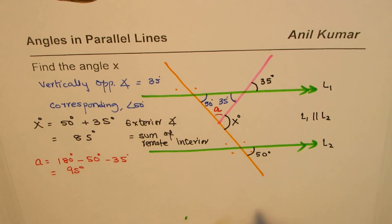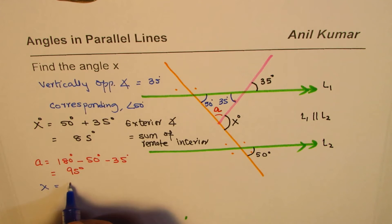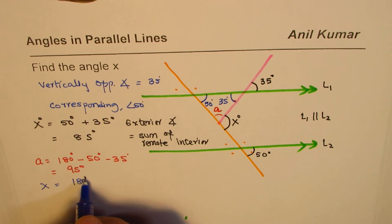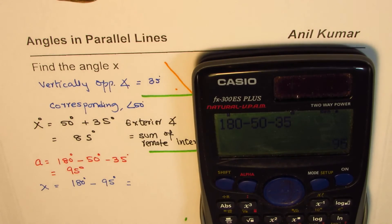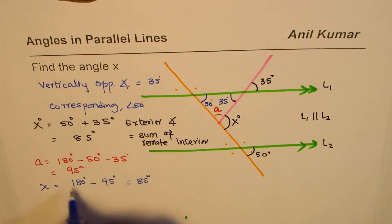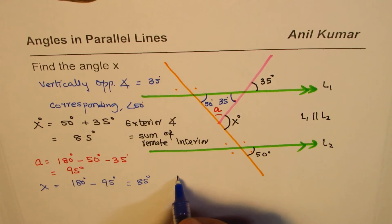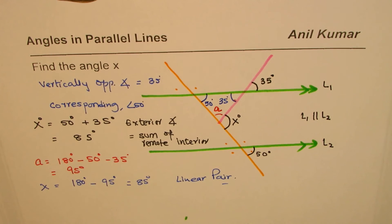And then you can find x. This is a linear pair, so it should be 180 degrees take away 95 degrees. So it is 180 take away 95, it again gives you 85 degrees, as expected, same answer. This is because these two angles form a linear pair. So that way you can actually solve such a situation.